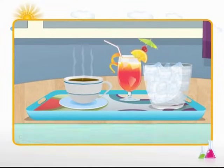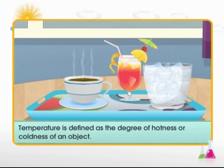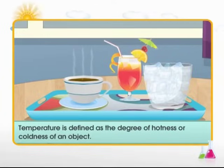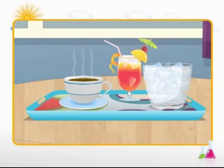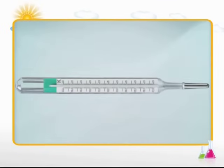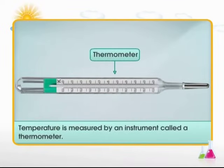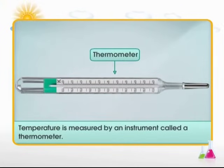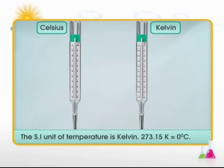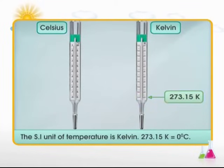Temperature is defined as the degree of hotness and coldness of an object. Temperature is measured by an instrument called a thermometer. The SI unit of temperature is Kelvin. 273.15 K is equal to zero degrees Celsius.